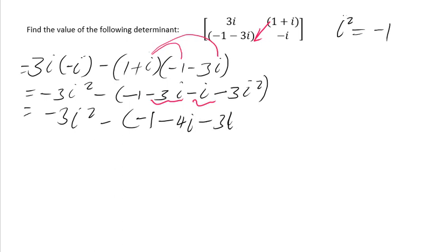Remember, this you can write as i² or you can write it as 3 times minus 1, but let's not do that yet. So we're going to do the like terms. Later you remove the minus now, so minus times minus 1 you're going to get plus 1, then minus times minus 4i you're going to get plus 4i, then minus times minus 3i² you're going to get plus 3i².